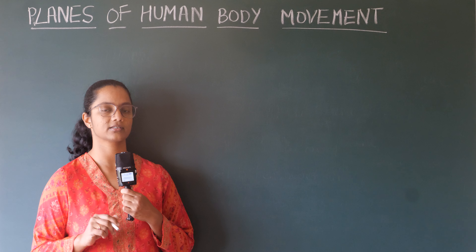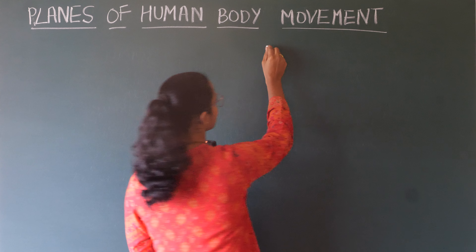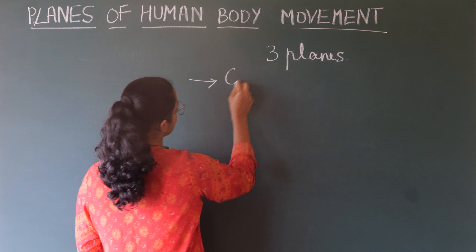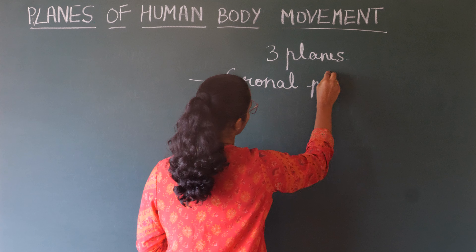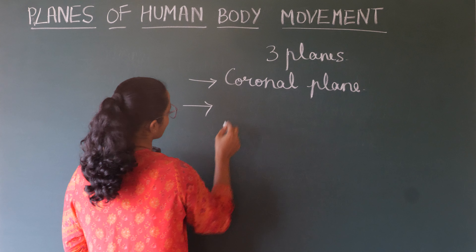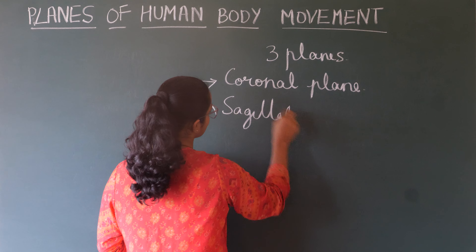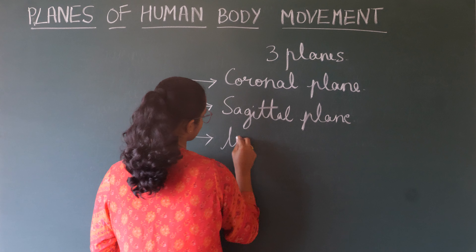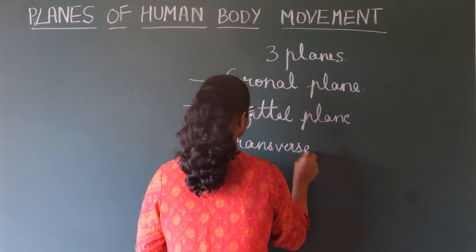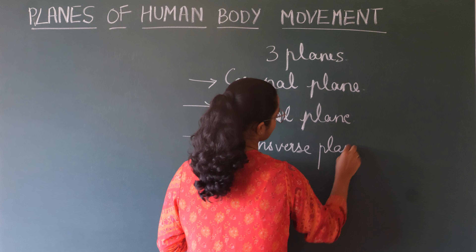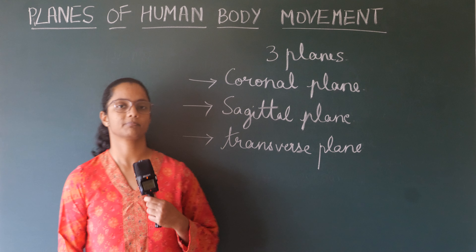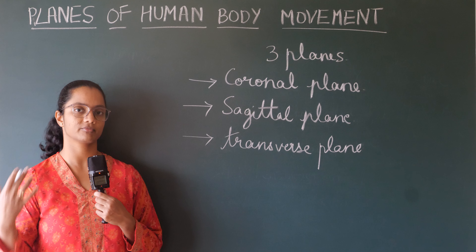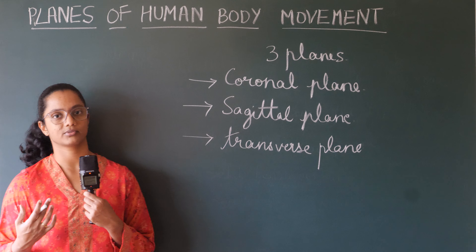Human body movement takes place in three planes: the coronal plane or frontal plane, the sagittal plane, and the transverse or horizontal plane. These three planes are imaginary — they do not exist. But to study and understand human body movement, it is important to get an understanding of these three planes.